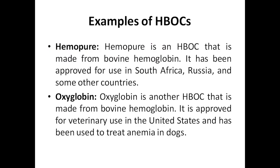Examples of HbOCs prepared by pharmaceutical companies: Hemopure is an HbOC made from bovine hemoglobin — extracted from animal blood — and has been approved for use in South Africa, Russia, and some other countries, not all. Oxyglobin is another hemoglobin-based oxygen carrier also made from bovine hemoglobin, approved for veterinary applications in the US and has been used to treat anemia in dogs.